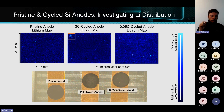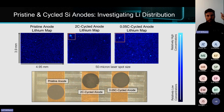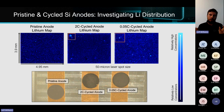But if we were to look at this on average, they might not look that different — which is deceiving, which is why you have to look at it in space. Because this 2C battery is pretty much failed or on its way to failure, and the 0.05C isn't there yet. And it's because of these morphological differences at this scale.